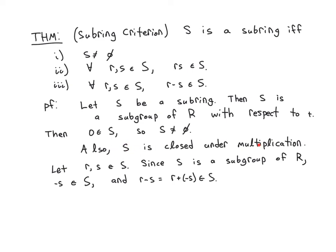Also, by definition of subring, S has to be closed under multiplication. So these two conditions are automatically met. Finally, take R and S elements in our subring. Since S is a subgroup of R with respect to addition, we know S is closed under inverses. So negative S is also in S. And we're closed under addition. So R plus negative S is in S. That's equal to R minus S. So we get all three conditions.